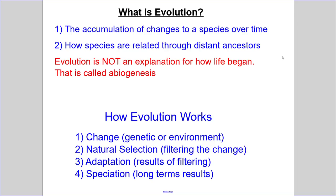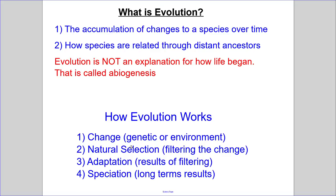To tie everything up — evolution is the accumulation of changes to a species over time, and it's how species are related through distant ancestors. It is not an explanation for how life began — that's something entirely different called abiogenesis. The way evolution works involves four main drivers: first, a change — genetic mutation or environmental change; second, natural selection — filtering so only the best-adapted animals survive; third, adaptation — the results of that filtering; and fourth, speciation — the long-term result when animals split into different species. If you have any questions, leave them in the Google Doc. Thank you for listening.